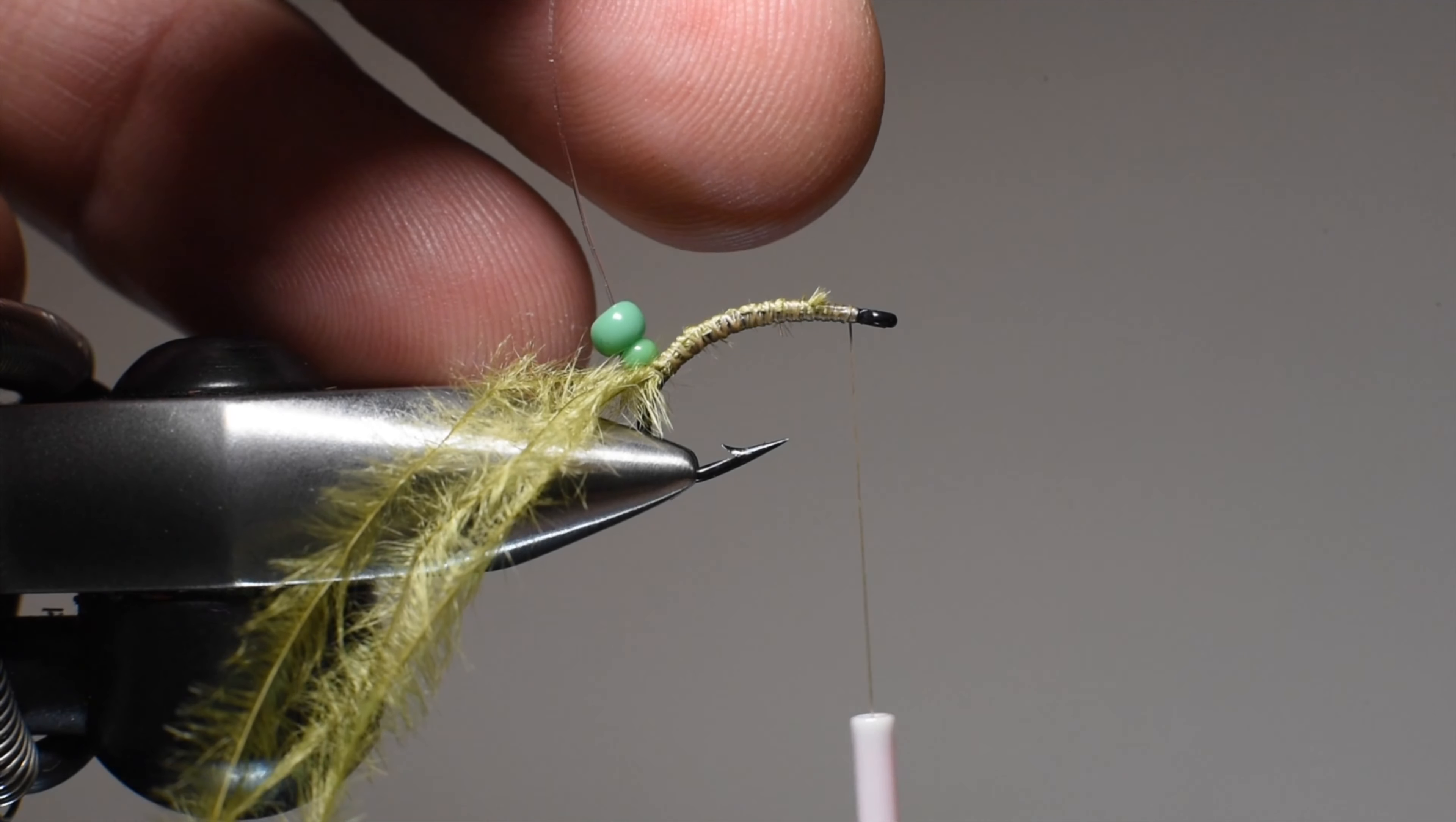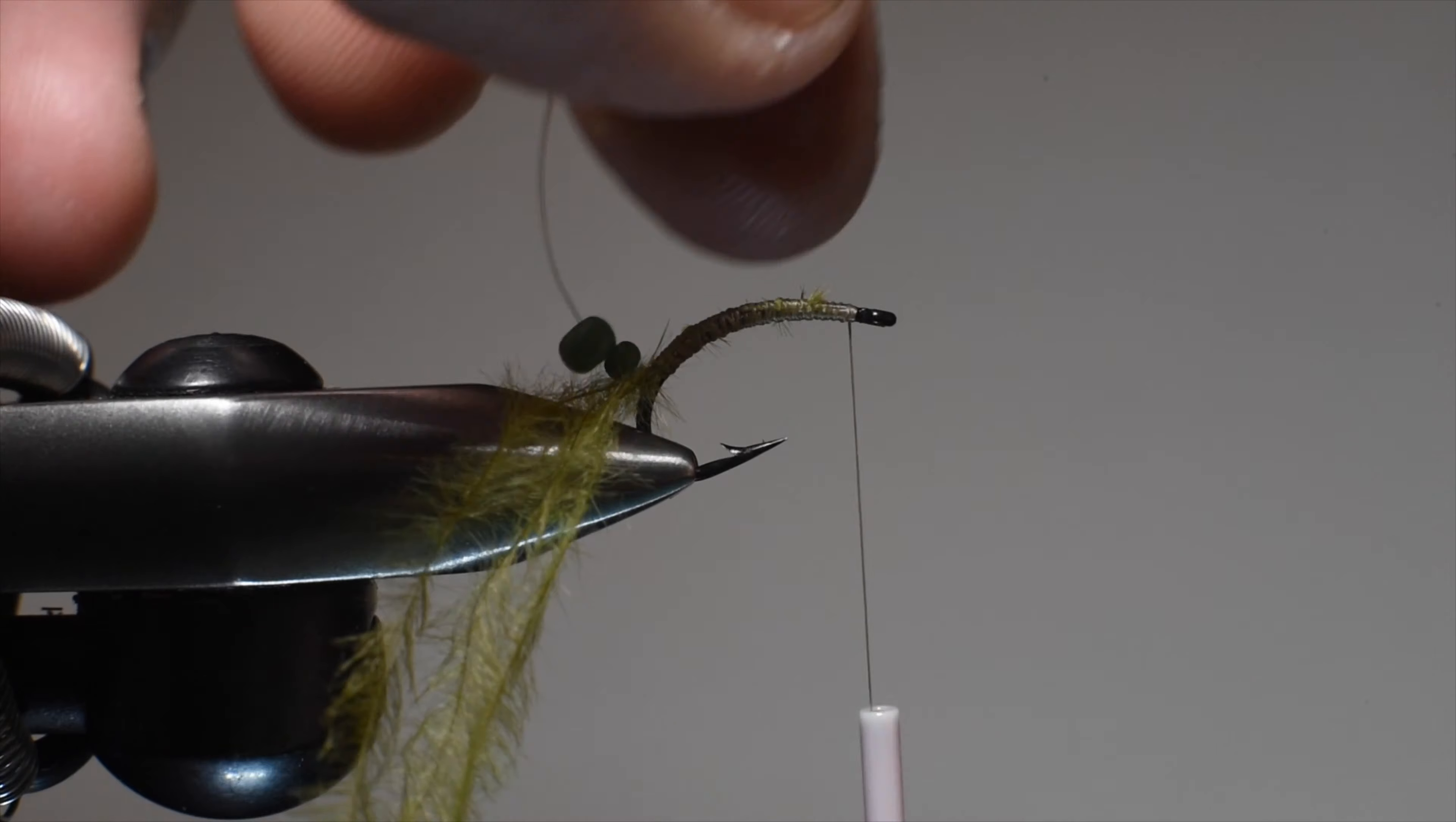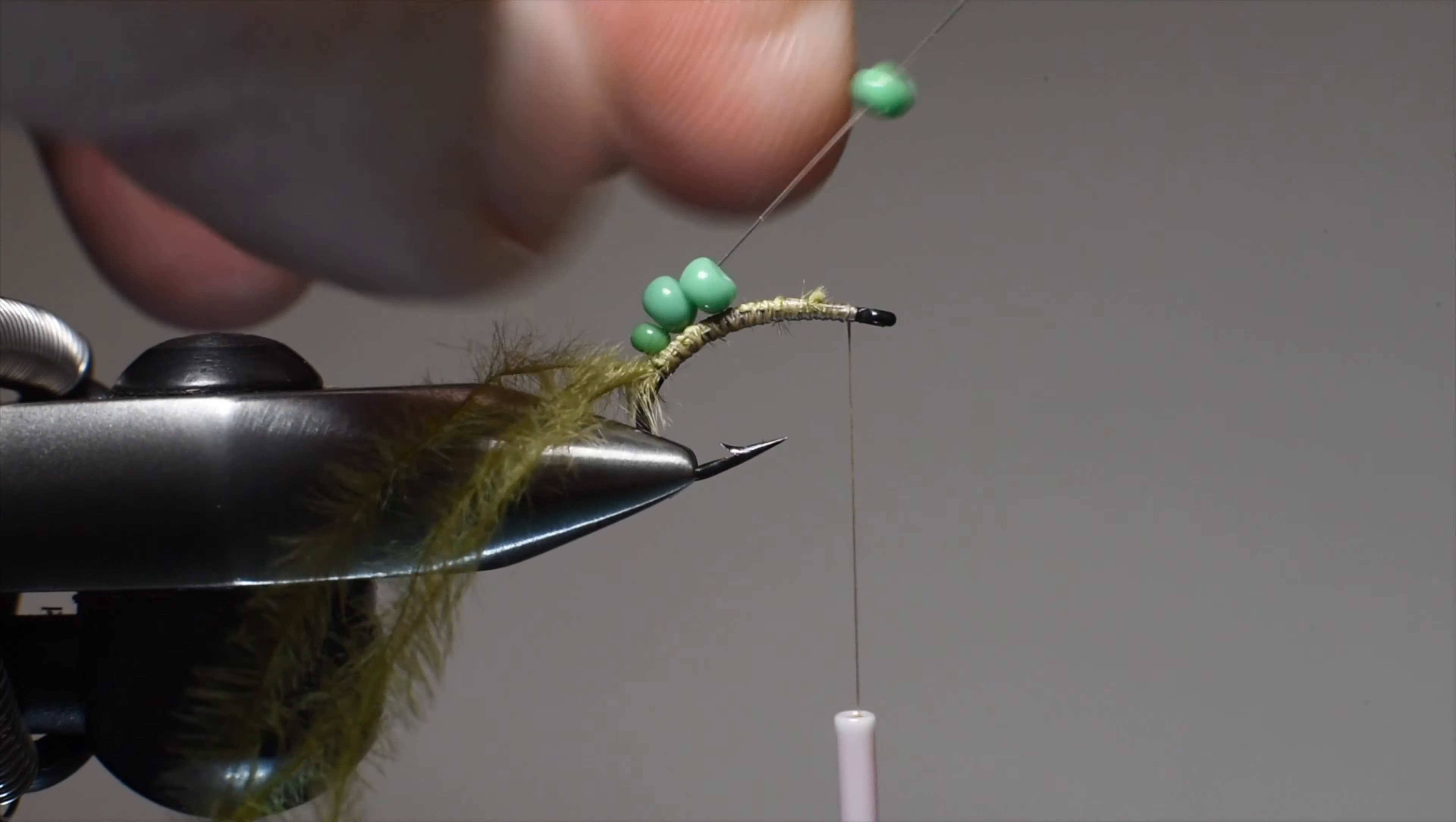Then I'll step up to an 11/0 glass bead in the same color. I'll work my way up and you can judge as you go how many you're going to need. Basically you want to fill the back of the shank and leave room for one bead. I'll put another one of these same size 11/0, and I'm going to add an orange hot spot.